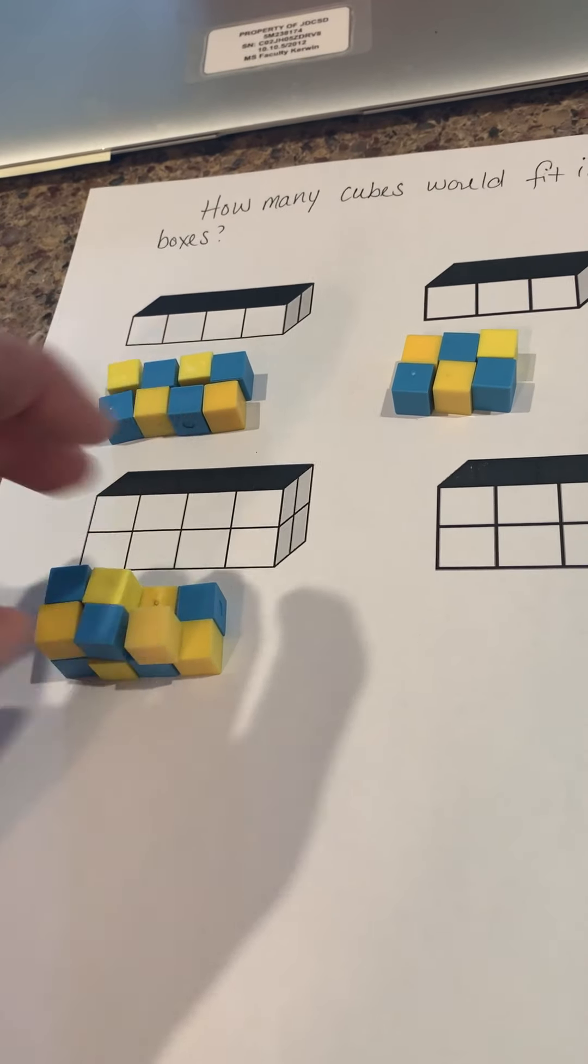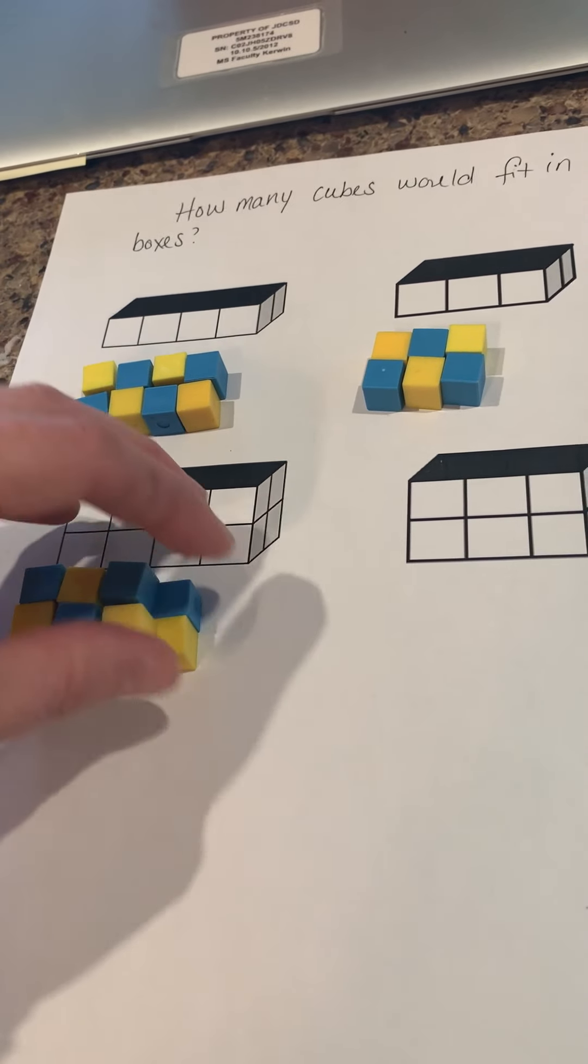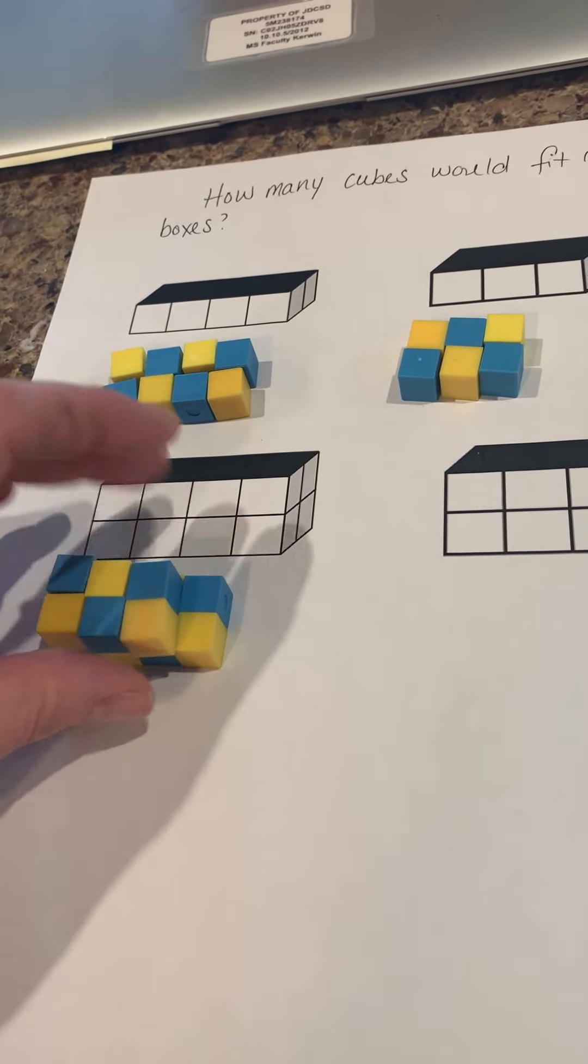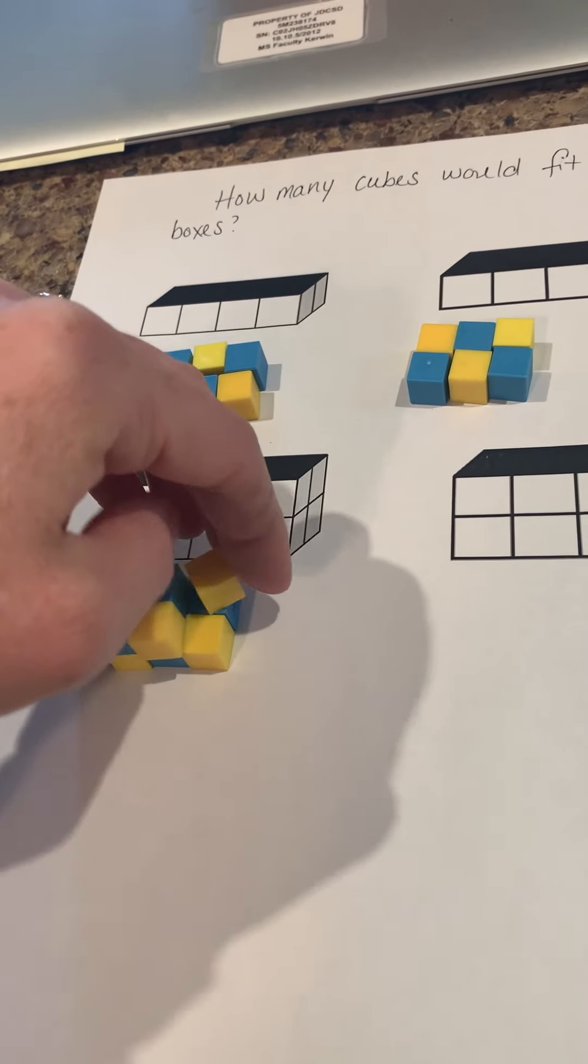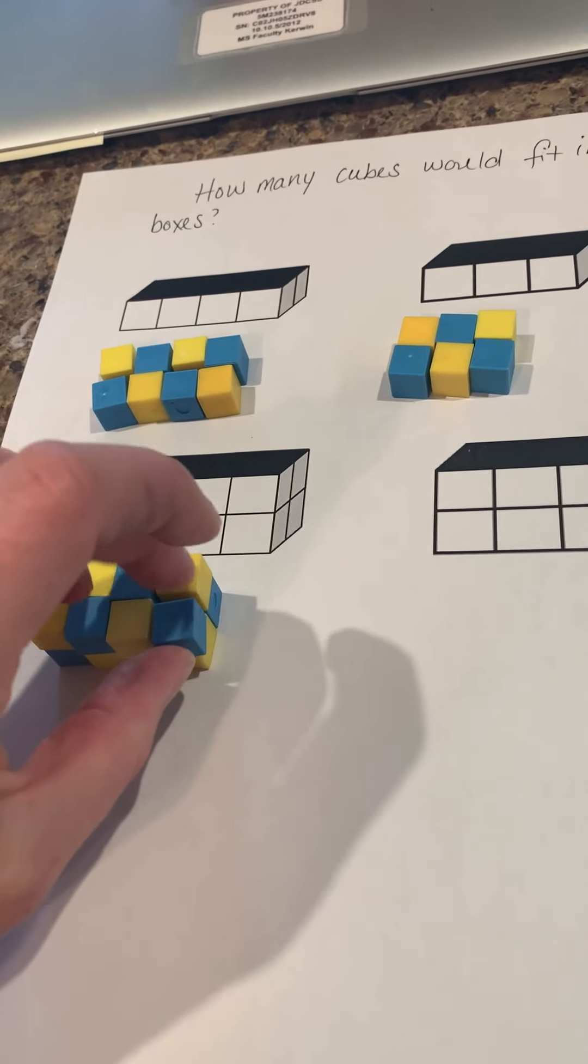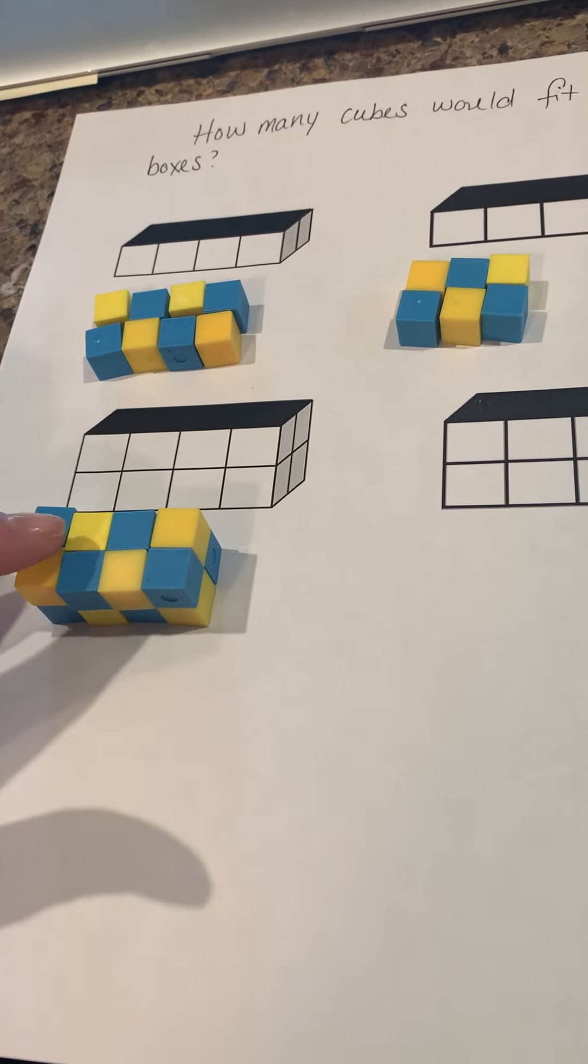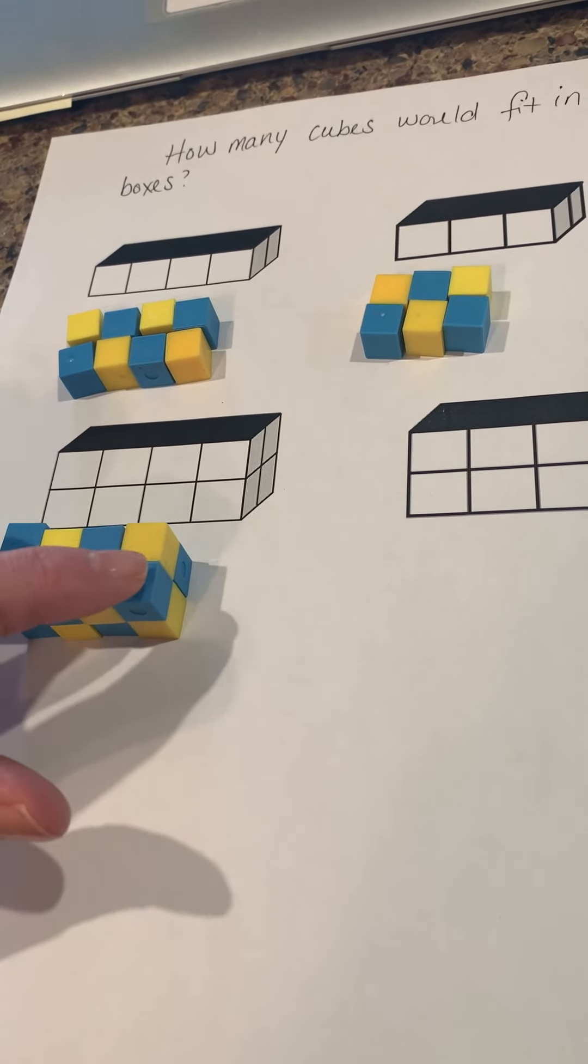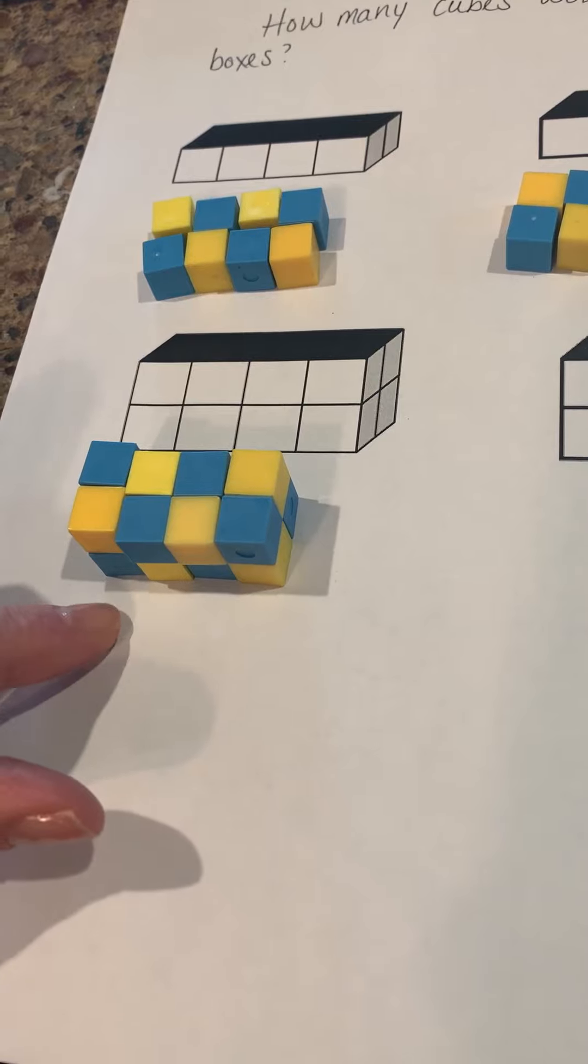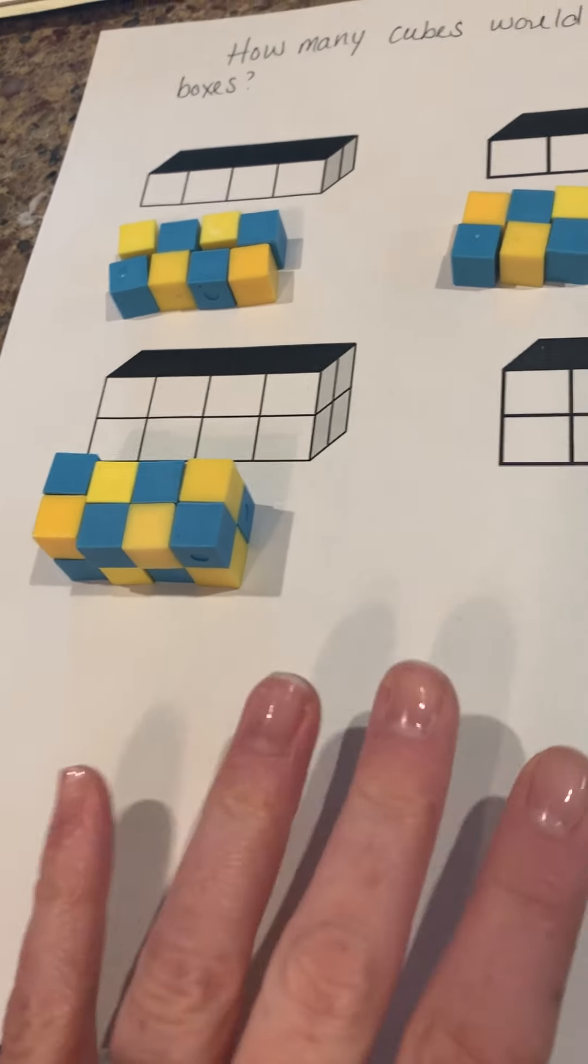Now, some of you might be able to do this mathematically and go, well, Miss Kerwin, if the bottom layer had eight, then the top layer is also going to have eight. And that is correct. You will see there's one, two, three, four, five, six, seven, eight. So there's eight here and there's eight on the bottom layer. So eight plus eight, that'd be 16.